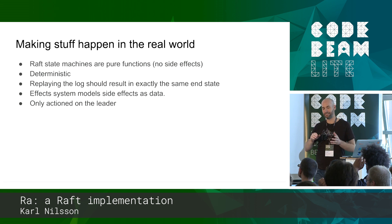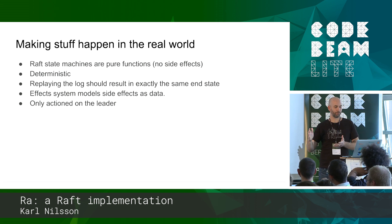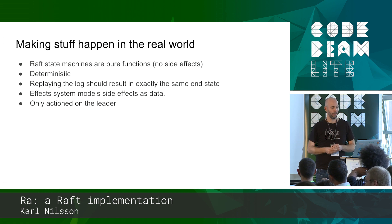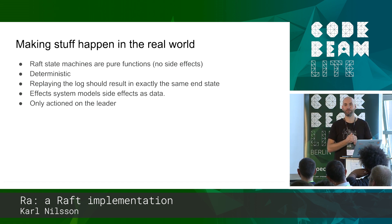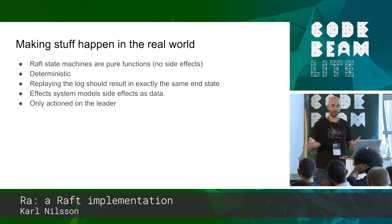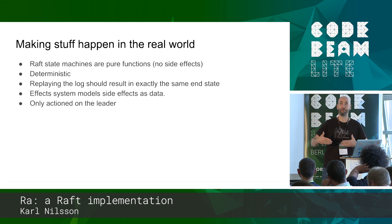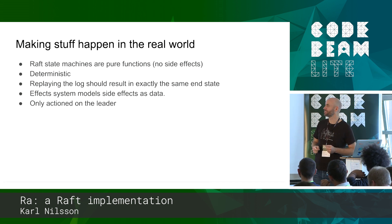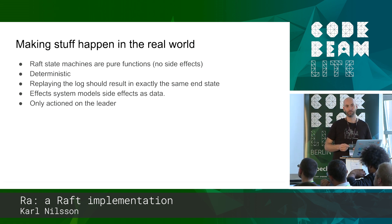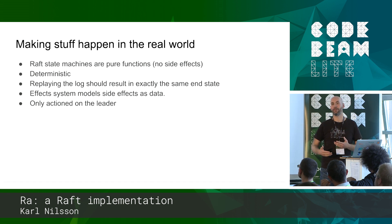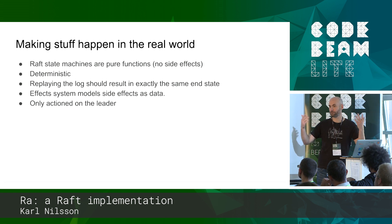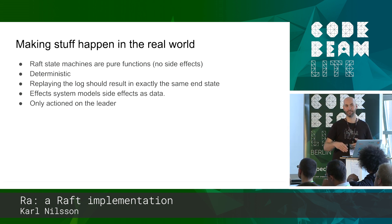One thing we didn't see is how we make the Ra machine do stuff in the real world - how can we make it have effects on the outside environment if the Ra state machine is a pure function, a data transform, and deterministic? The way we do that is through the effects argument - it's a list of effects. An effect describes a side effect as data. By doing so we can implement a system such that effects are only actioned by the leader and not by all nodes, because all nodes run the same commands - that's why we can't send messages inside the apply function, because we would get the number-of-nodes messages back.